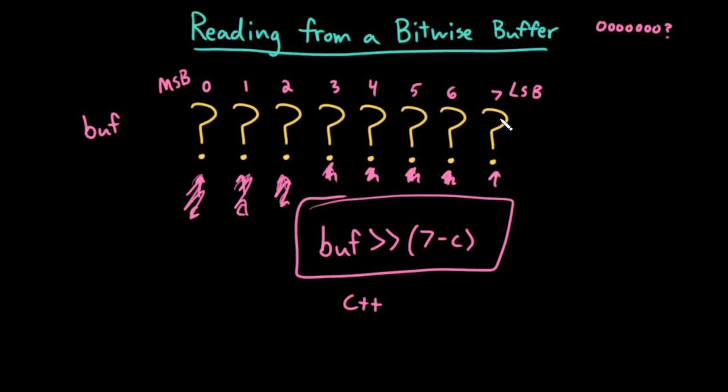I read, so I would return this bit. c is now seven. Seven minus seven is zero, so I don't shift this at all. I return that value, I increment, and now c is at eight.